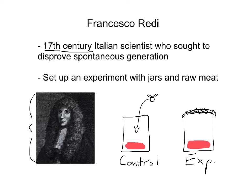He thought: if I leave it exposed to the air, that will let adult flies lay their eggs, and I can prove that it's flies that are actually making these maggots. So the control had a bunch of flies going inside, laying their eggs, and before you knew it, little maggots were crawling around. With the experimental group, flies could smell the meat but they can't get in — sad face for the flies.